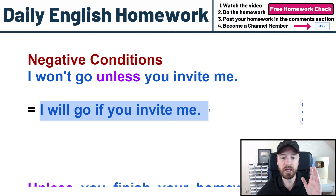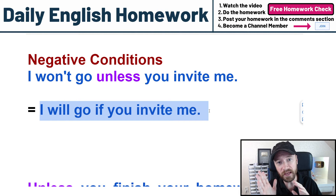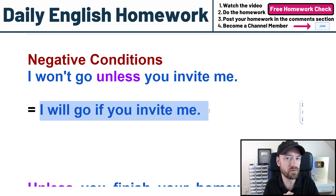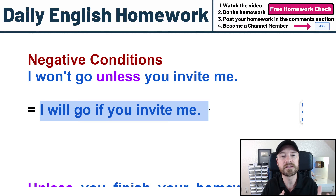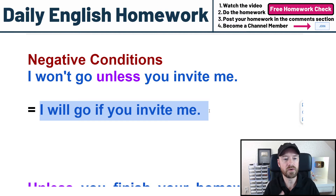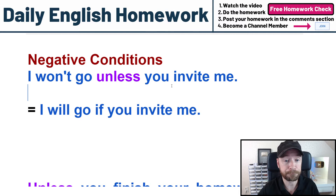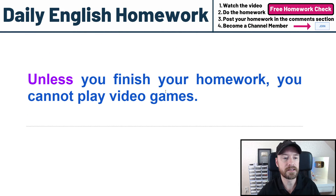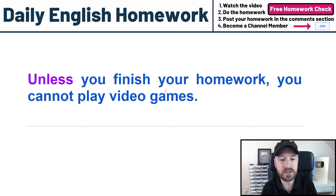I don't want you to think of UNLESS as simply the opposite of IF — I wrote that comparison so you understand what's happening in the sentence, but as we go on just get a sense of how and when to use UNLESS. Now we're beginning this next sentence with UNLESS: 'Unless you finish your homework, you cannot play video games.' When we start a sentence with a conjunction we use a comma, as you can see here. There is no comma before or after UNLESS when it's in the middle.